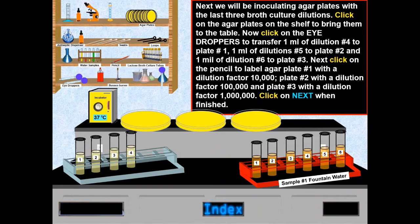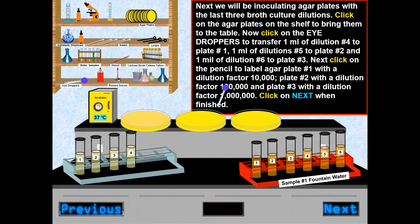1 ml of dilution number 5 to plate number 2, and 1 ml of dilution number 6 to plate number 3. Then the agar plates were labeled with pencil.